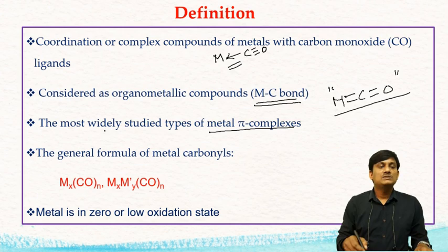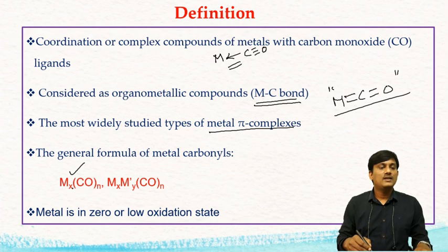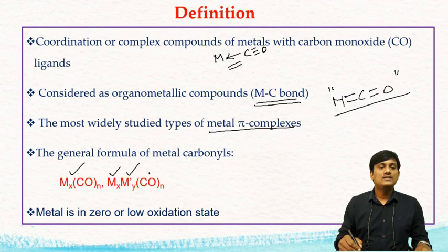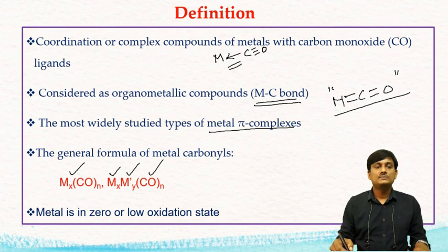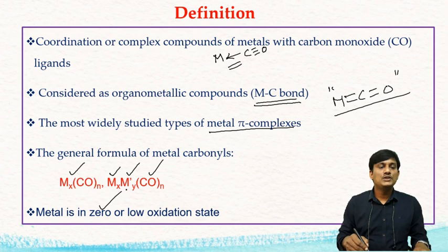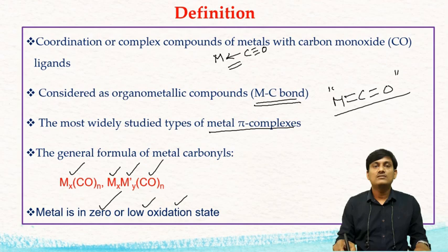Metal carbonyls are the most widely studied types of metal pi complexes. The general formula of metal carbonyls is Mₓ(CO)ₙ, where X is the number of metals M and N is the number of CO ligands. Sometimes you can find two different metals: Mₓ M'ᵧ(CO)ₙ. In metal carbonyls, the metal is generally in zero oxidation state or a low oxidation state such as +1 or −1.